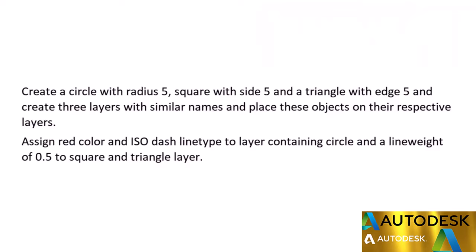Here is your question related to this module. You need to create a circle with radius 5 units, a square with side length 5 units, and a triangle with edge length of 5 units. Now make three corresponding layers with names circle, square, and triangle, and place these objects on the respective layers. Assign a red color and ISO dash line type to the layer containing the circle, and a line weight of 0.5 to the layers containing the square and triangle.